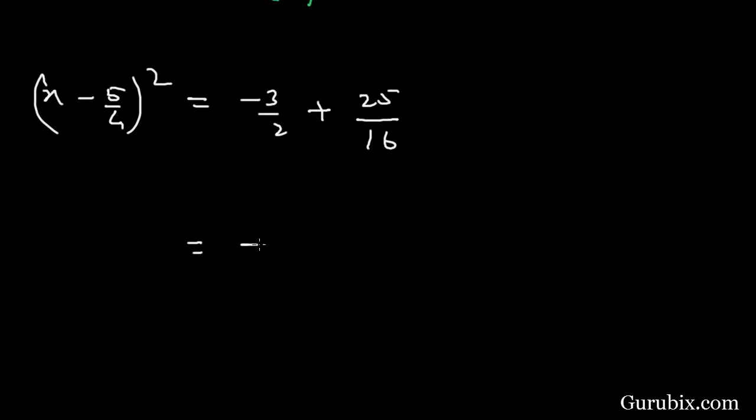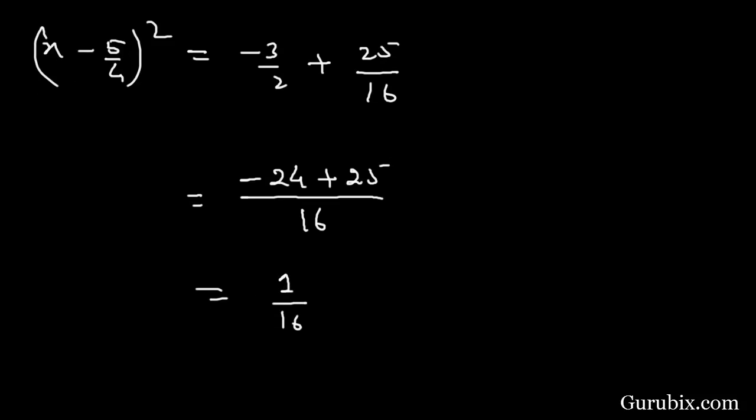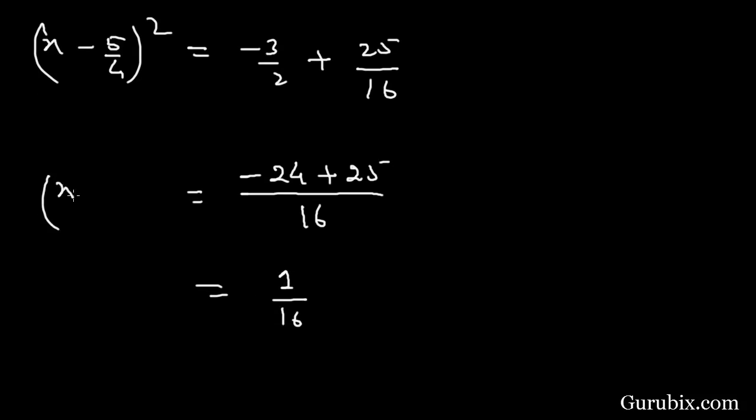If we add these two rational numbers, then the LCM is 16. Here, if we divide 16 by 2, we have 8. 8 times 3 is minus 24. Here we have 25, then this equals 1/16. This means the whole square of (x - 5/4) equals 1/16.